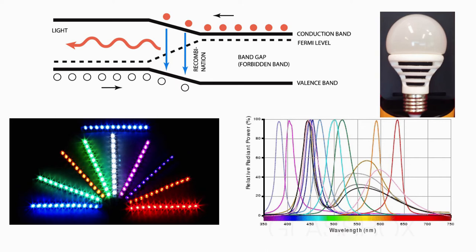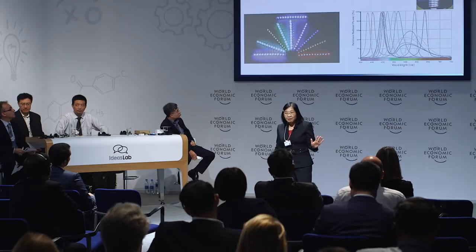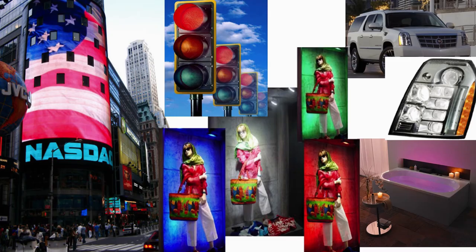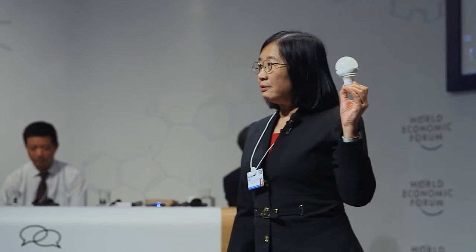Semiconductor LEDs emit only a single wavelength of light and give out no heat at all. With this technology we can make our world very colorful — all colors of light are possible. We can also make LED light bulbs that produce no heat. Before we had white LEDs, we were already using them for displays.